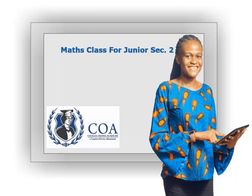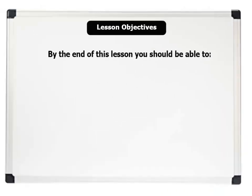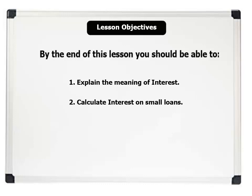Welcome. The topic of this lesson is Interest. Lesson duration remains 5 minutes. Let's see our lesson objectives. By the end of this lesson, you should be able to: 1. Explain the meaning of interest. 2. Calculate interest on small loans. 3. Calculate interest on savings.